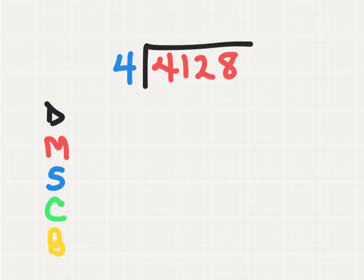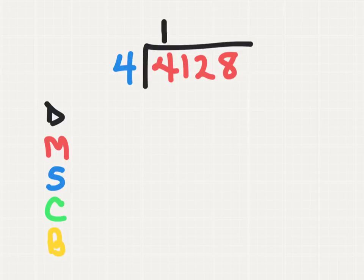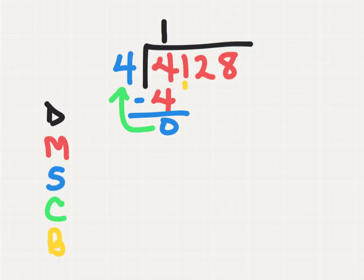In this example, we'll be dividing the dividend of 4,128 by a divisor of 4. We begin with step 1, divide. How many times can I subtract 4 from 4, or how many groups of 4 can I make from 4? The answer is 1. 1 times 4 is 4. When I subtract that, it leaves me with 0. I compare that to my divisor and it is less, so we bring down the 1.